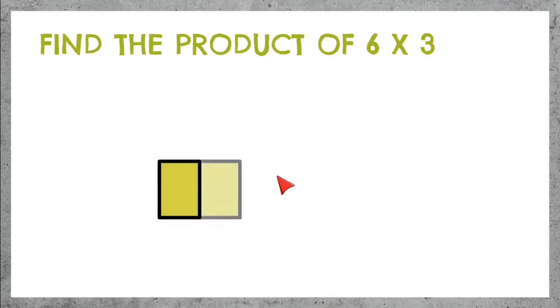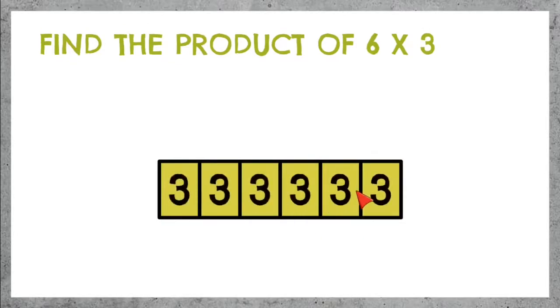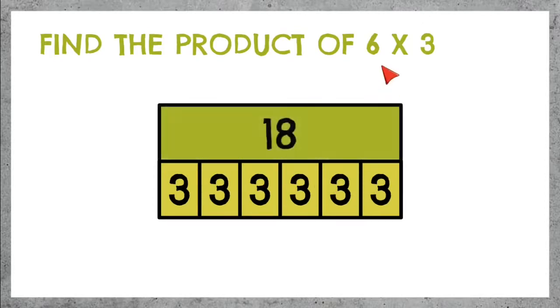Now we need 6 parts of 3 — 1, 2, 3, 4, 5, 6 — with 3 in each one. Let's add 3 plus 3 plus 3 plus 3 plus 3 plus 3, and we get 18. 6 times 3 equals 18.